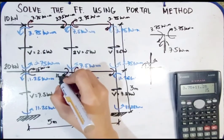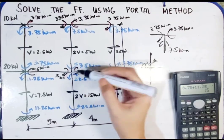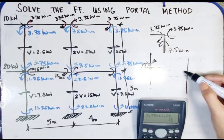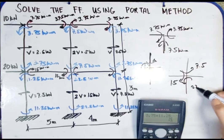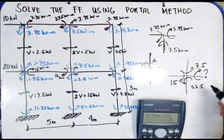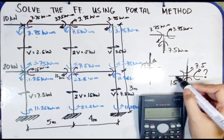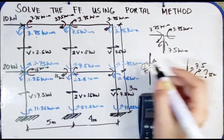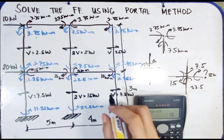That gives 15 kilonewton-meters on both ends of the upper exterior span by symmetry. For the interior joint of the second story, we have values of 7.5, 15, and 22.5 kilonewton-meters. We add the vertical moments and subtract the horizontal: 7.5 plus 22.5 minus 15 equals 15 kilonewton-meters. So we get 15 kilonewton-meters on both sides of that joint.